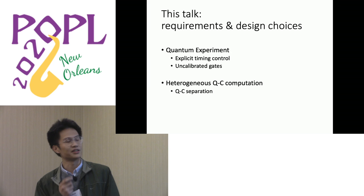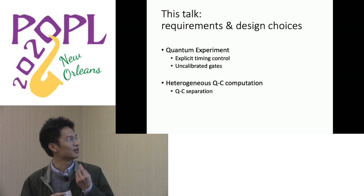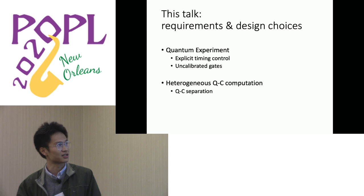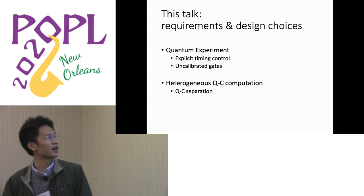The requirements to support these NISQ applications consist of roughly three parts. The first two are for quantum experiments: explicit timing control and supporting uncalibrated gates. The third is to support explicit quantum-classical separation to support heterogeneous quantum-classical computation.